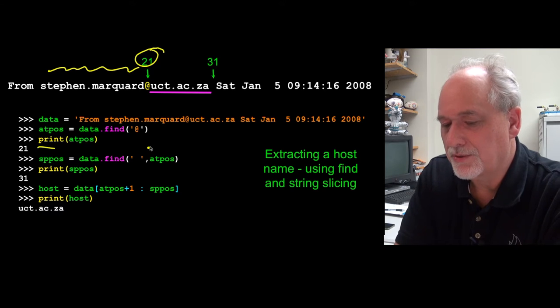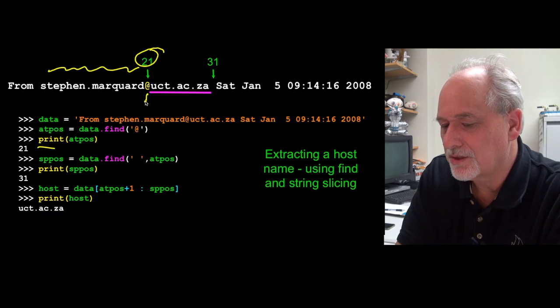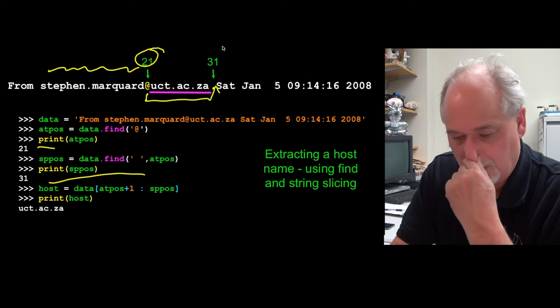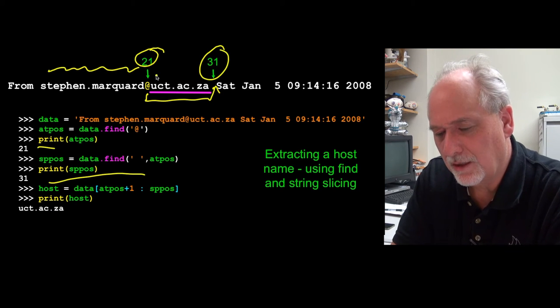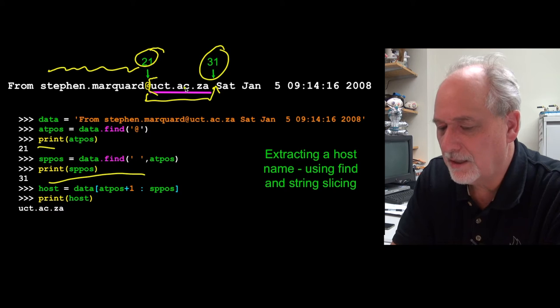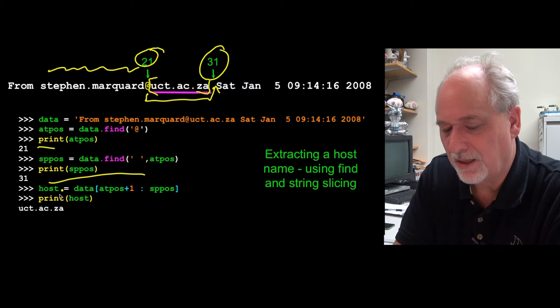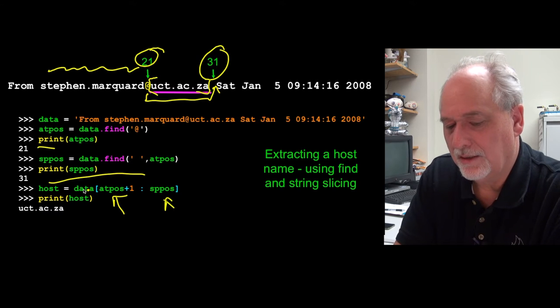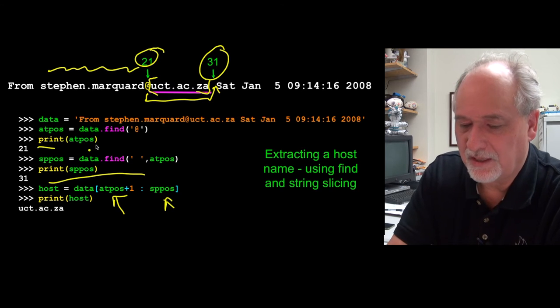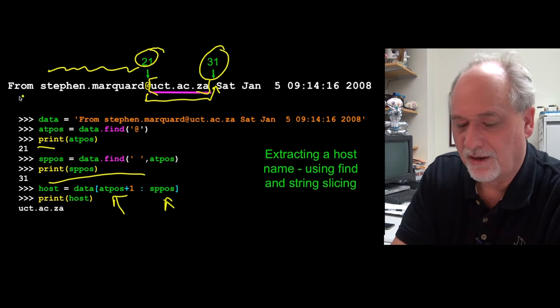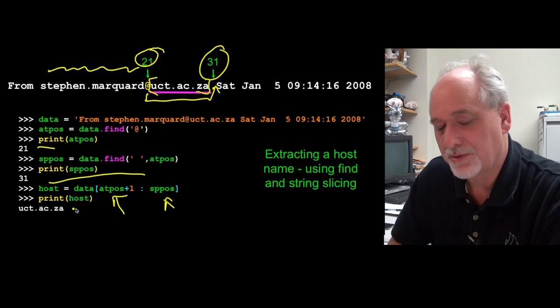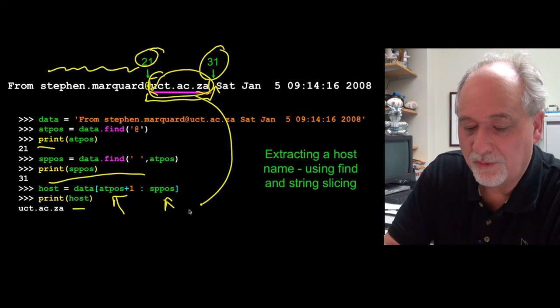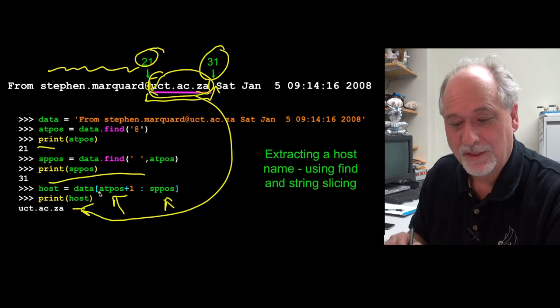And then what we do is we say, okay, let's look beyond there to the space and that tells us the space is in position 31. And then we're saying we can extract starting at beyond the at sign up to but not including the space by saying at pose plus one colon space position. And when we get that, now we have to have a thing that decides to only look at this on from lines but then it can print out the host that is extracting of this information. So that was one way that we did that.